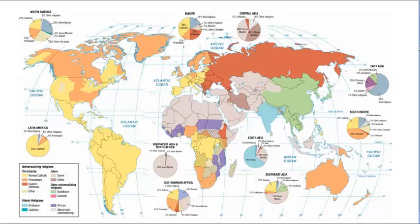Let's look at Christianity first, starting with the Western Hemisphere. As you can see, the Western Hemisphere is almost all Christian. In South America and Central America and Mexico, it's almost all Catholic. Then in North America, it's a combination of both Catholic and Protestantism.